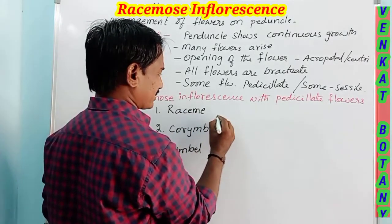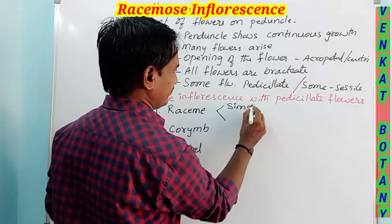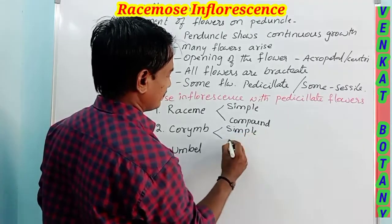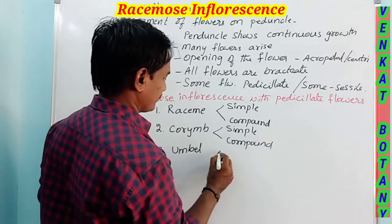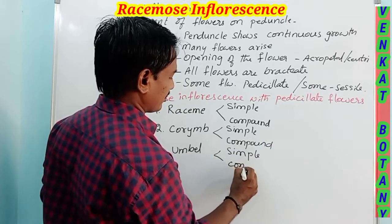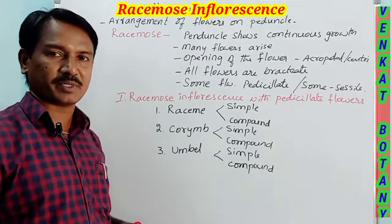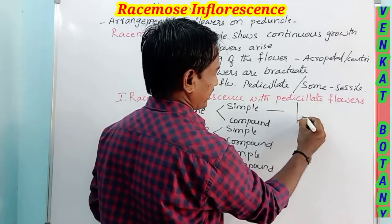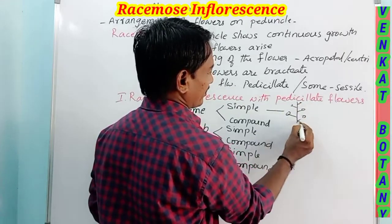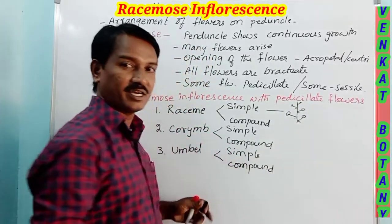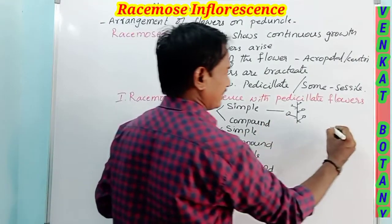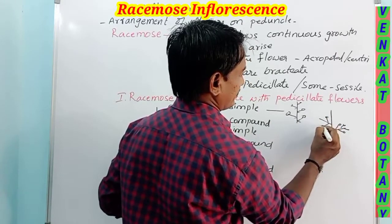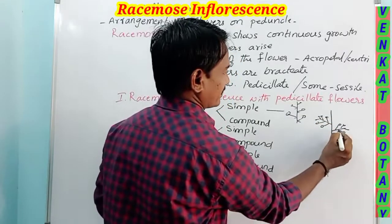Each of these three types has two subtypes: simple and compound. Simple raceme means the peduncle is unbranched — peduncle shows continuous growth and pedicellate flowers arise laterally. Opening of the flower is acropetal, all flowers are bracteate and pedicellate. Compound raceme means the peduncle is branched, each branch resembling a simple type.